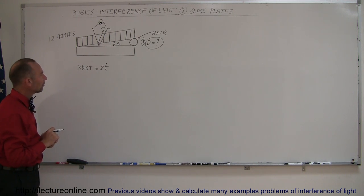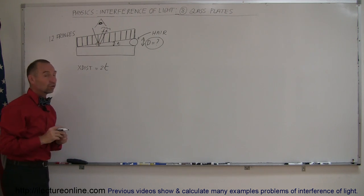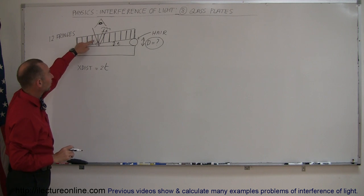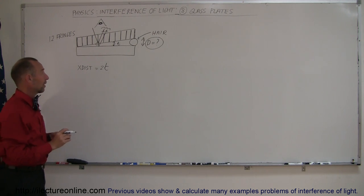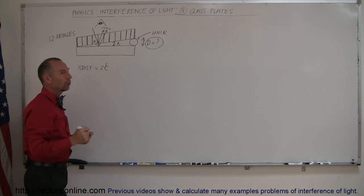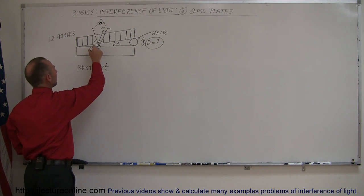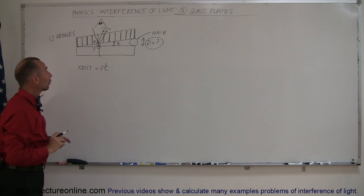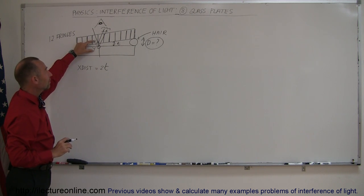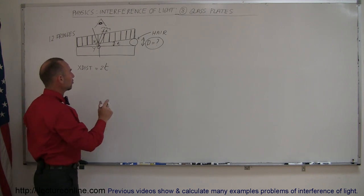We also have to look at whether there are phase shifts on the boundaries. At the very top boundary, there's no phase shift because the ray is going from glass to air — that's from a higher to a lower index of refraction. But at the bottom surface it goes from air to glass, from a lower to a greater index of refraction, so yes, there is a phase shift there.